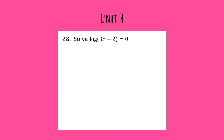The first step to solving this equation is to write in the base. Because there is no base written and I have the word log, I can assume this is a common log, which means it has base 10. Now that I have the base written in, I can use the heart shortcut to put it into exponential form. Starting with my base of 10, I first stop on 0 and then on 3x minus 2. In exponential form: 10 to the 0 power equals 3x minus 2.